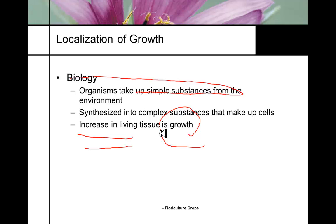In biology, organisms take up simple substances from the environment to grow and differentiate. Plants take up water, carbon dioxide, and nutrients. These simple substances are modified into complex substances to make up the cells, and ultimately the increase in living tissue is growth.